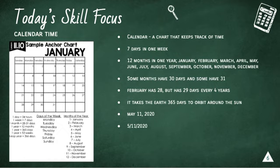If we were to write today's date with only numbers, it would be 5 slash 11 slash 2020.